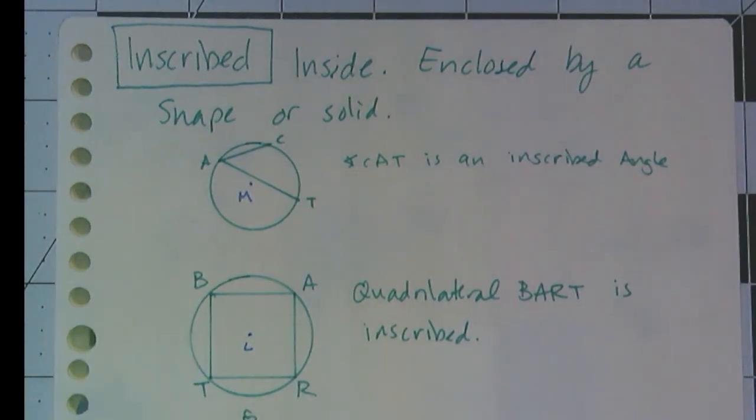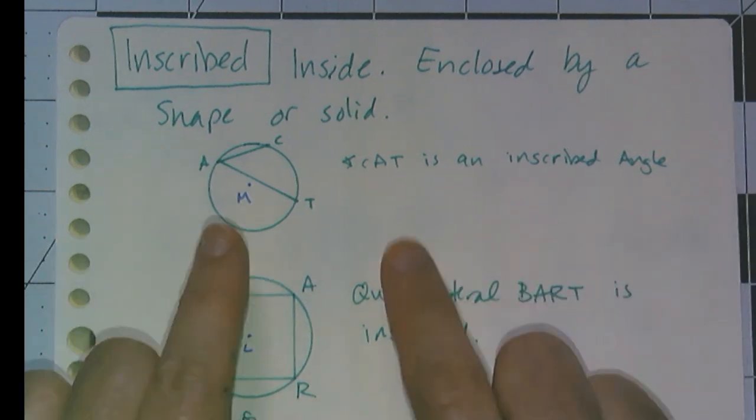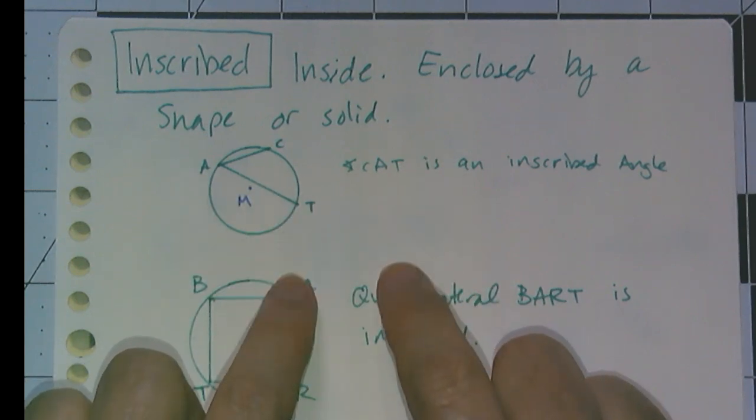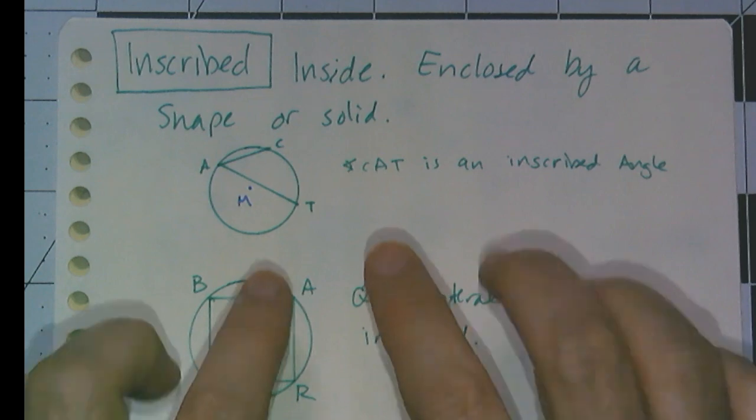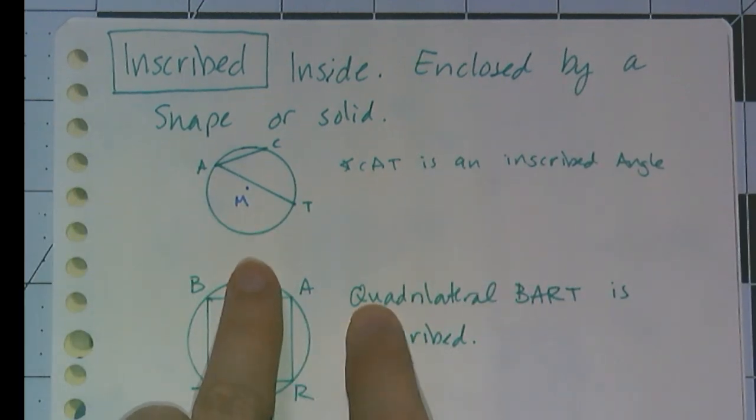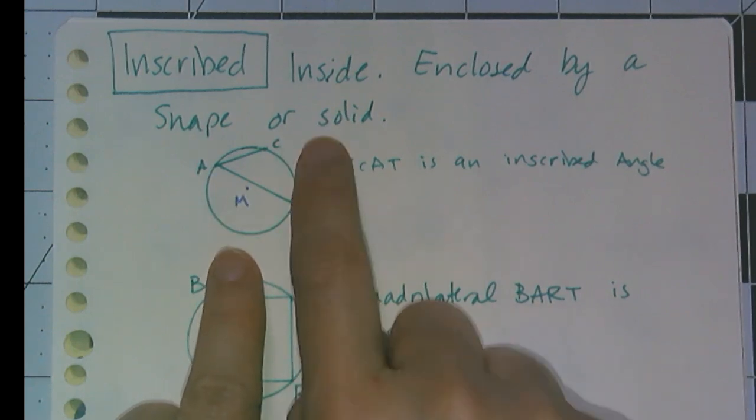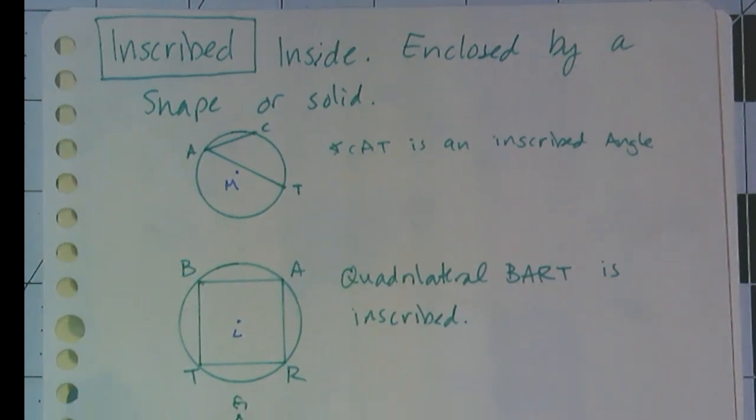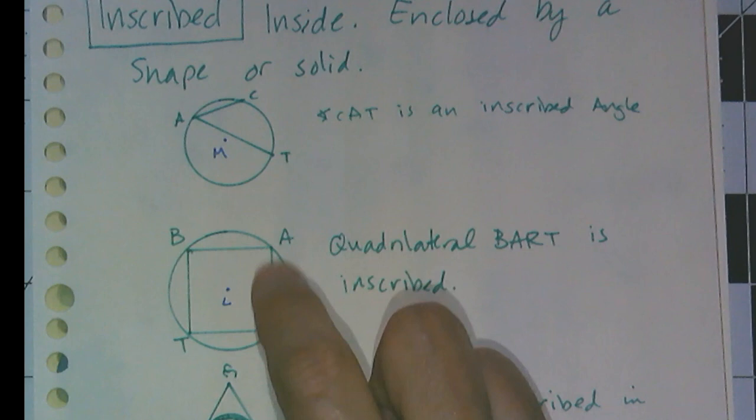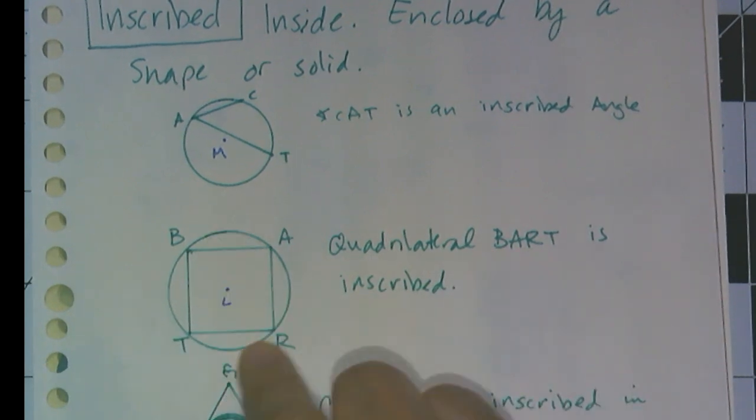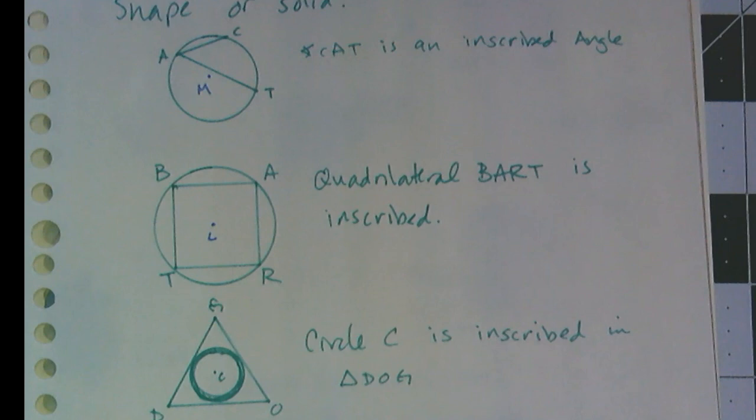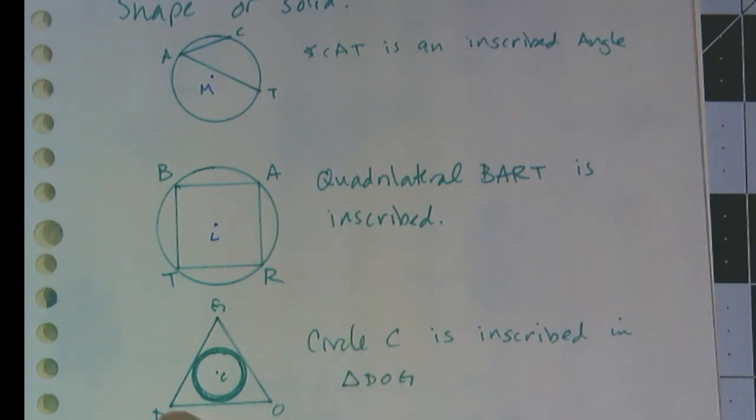And finally, with circles, I'm going to define two more words that are descriptors that don't only apply to circles. The first word is inscribed, which means inside, or enclosed by a shape or solid. You're going to see a lot of these when we get to circles. This angle, CAT, is an inscribed angle. So it is inside circle M. I can have polygons inscribed. So quadrilateral BART is inscribed in circle L. And then it doesn't have to be a circle. On the outside, I can have a triangle, DOG, and circle C is inscribed inside of triangle DOG.